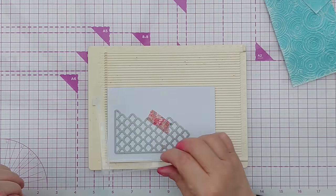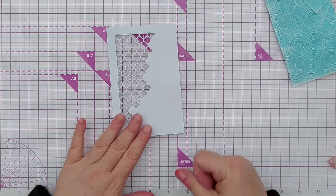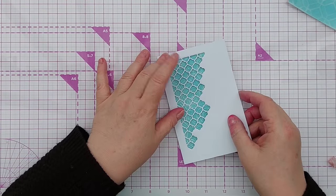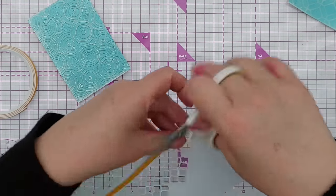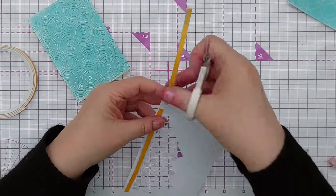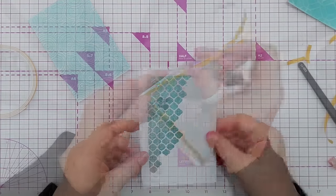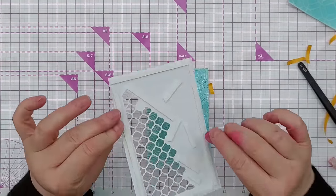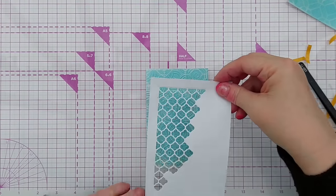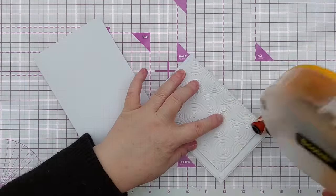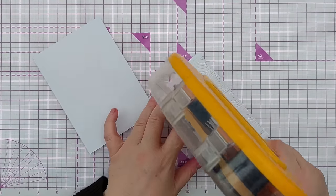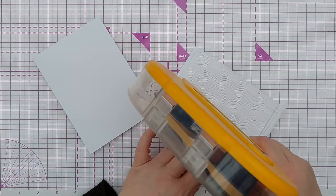There's our aperture. To add some extra dimension, I'm going to pop this layer up on foam tape. Now I've taken the backing off the foam tape, I can pop this on here. Now that's stuck down, I can pop this on a 4 by 6 inch card blank.